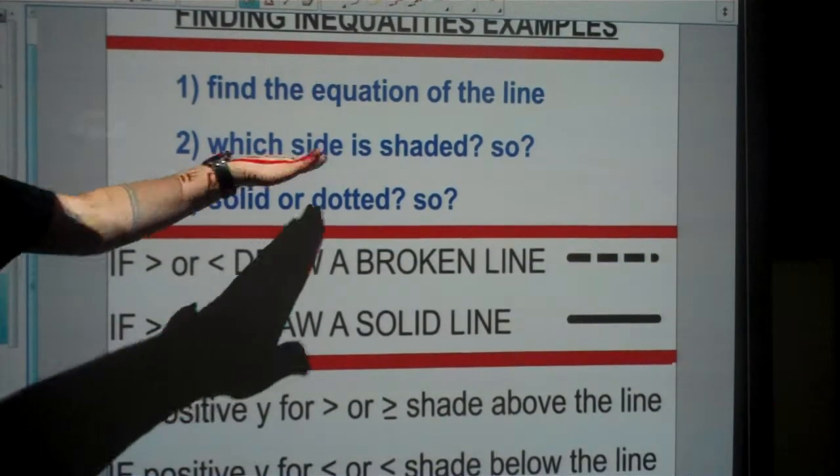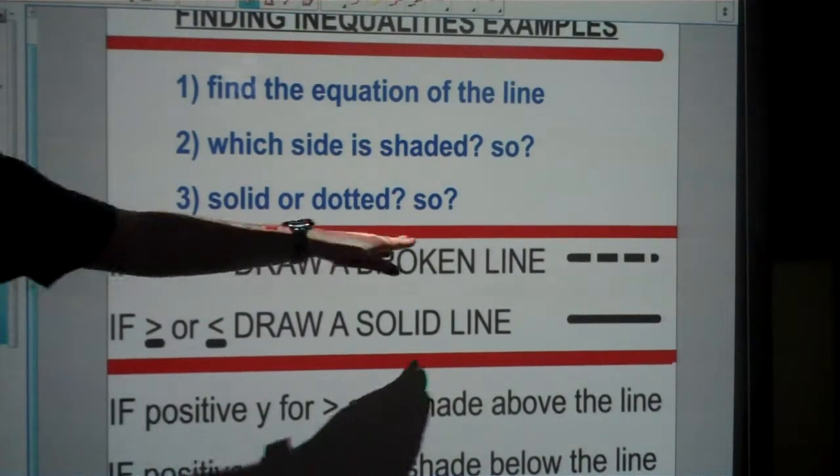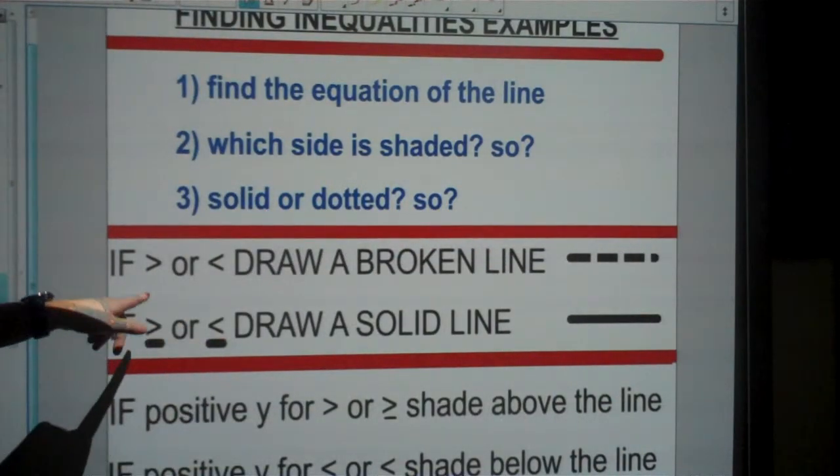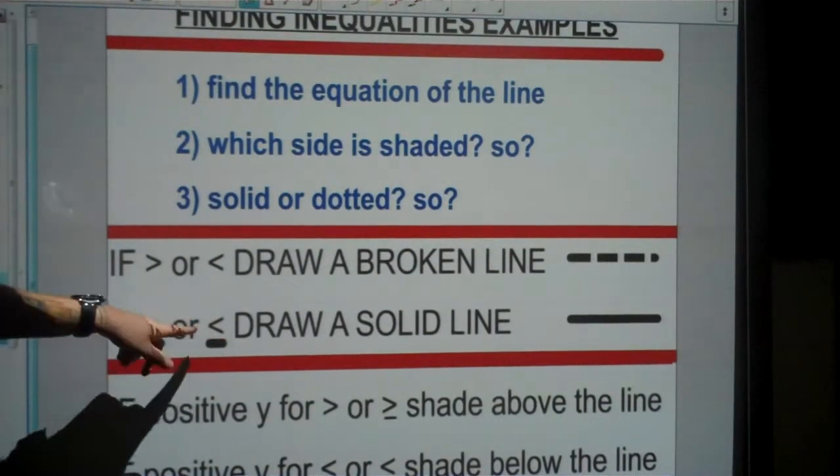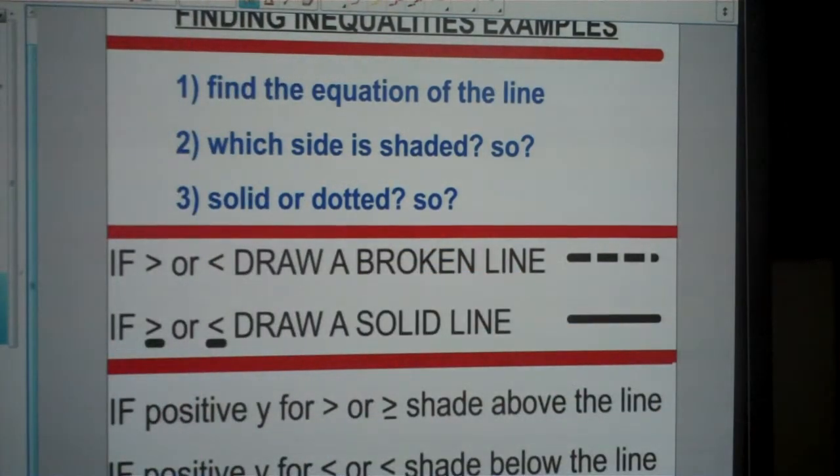Also consider whether it's a solid or dotted line, and what that means. If you see a dotted line, there's no equals part. If you see a solid line, that represents the equals part of our inequalities. The main characteristic of inequality questions is the shading.